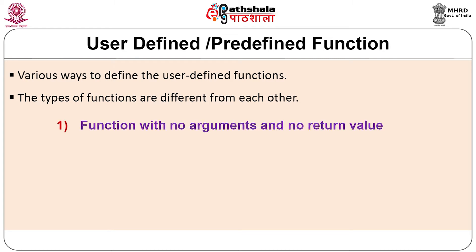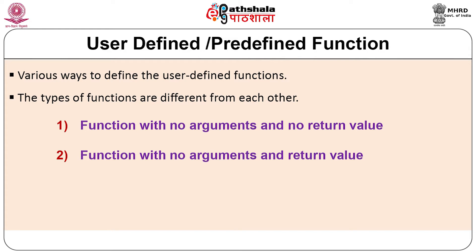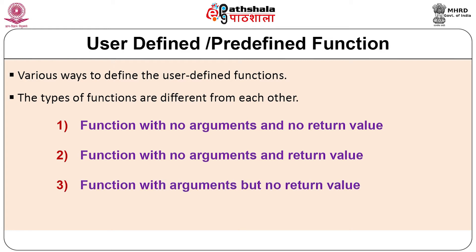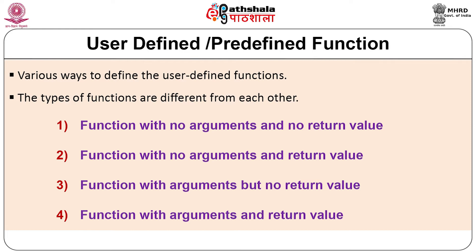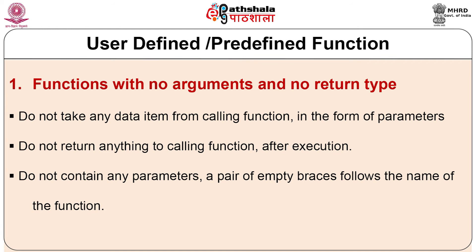We can define functions in the following ways: number one, function with no argument and no return value; number two, function with no argument but a return value; number three, function with arguments but no return value; and number four, function with arguments and a return value. Functions with no argument and no return type do not take any data parameter from the calling function and do not return anything to the calling function after execution.